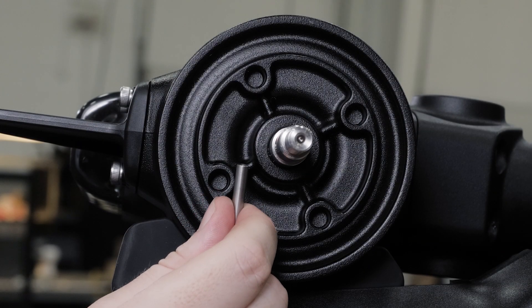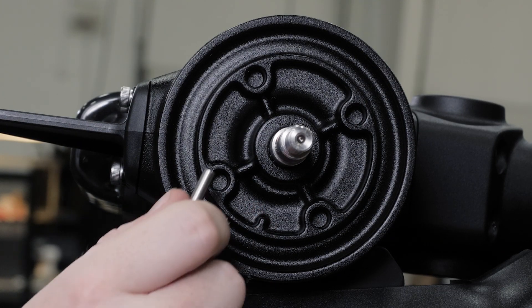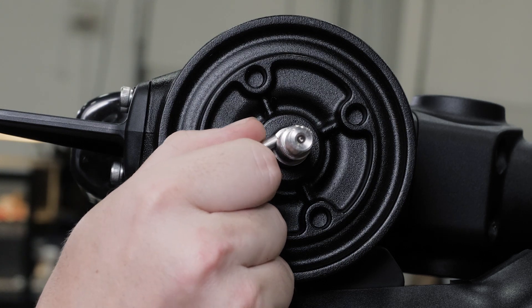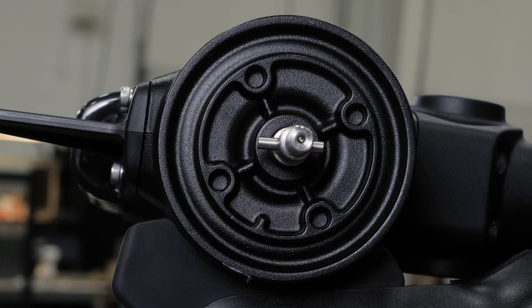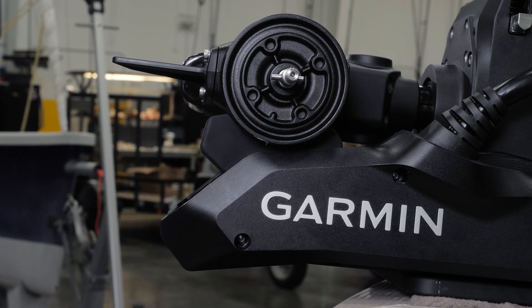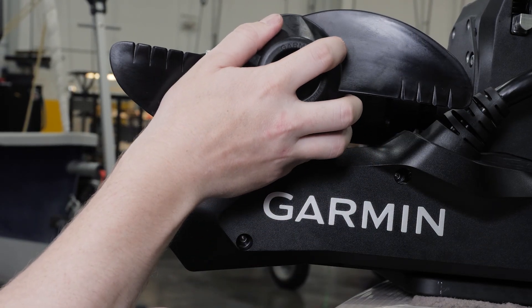Next we will install the propeller. Rotate the motor shaft to orient the pin horizontally so it's less likely to fall out during installation. Insert the pin through the propeller motor shaft. Align the channel on the inside of the propeller with the pin and slide the propeller onto the motor shaft.